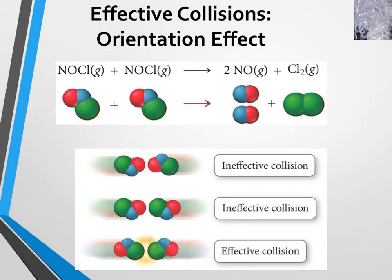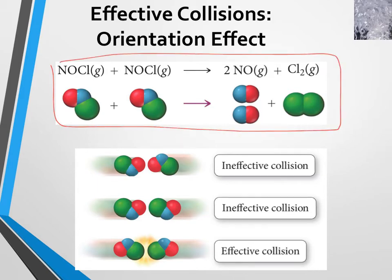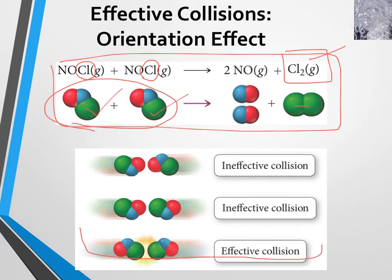So a collision must also occur with the correct orientation. Let's just look at this reaction as an example. You can see that each of the reactants has a chlorine atom, and ultimately those two chlorine atoms need to get together, form a bond between them, and make molecular chlorine. So these two reactant molecules must collide in a way that allows the two chlorine atoms to form a bond with each other.